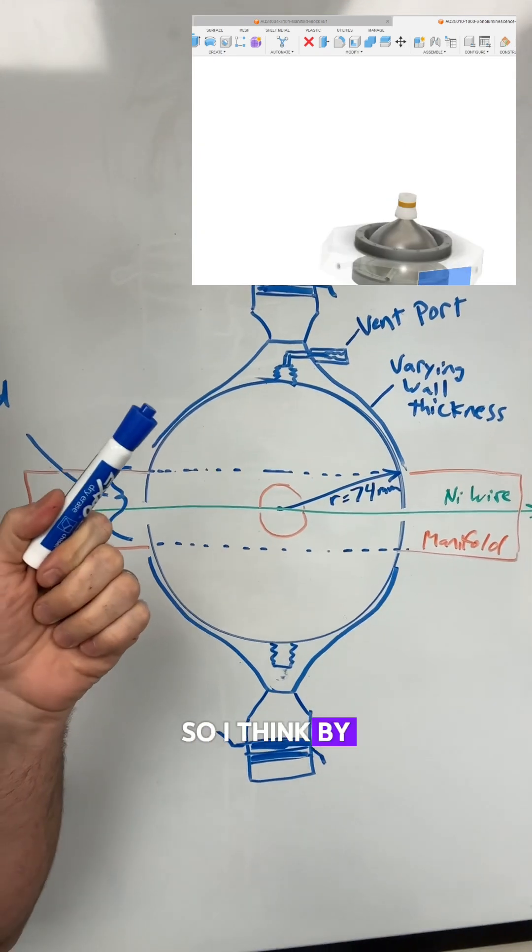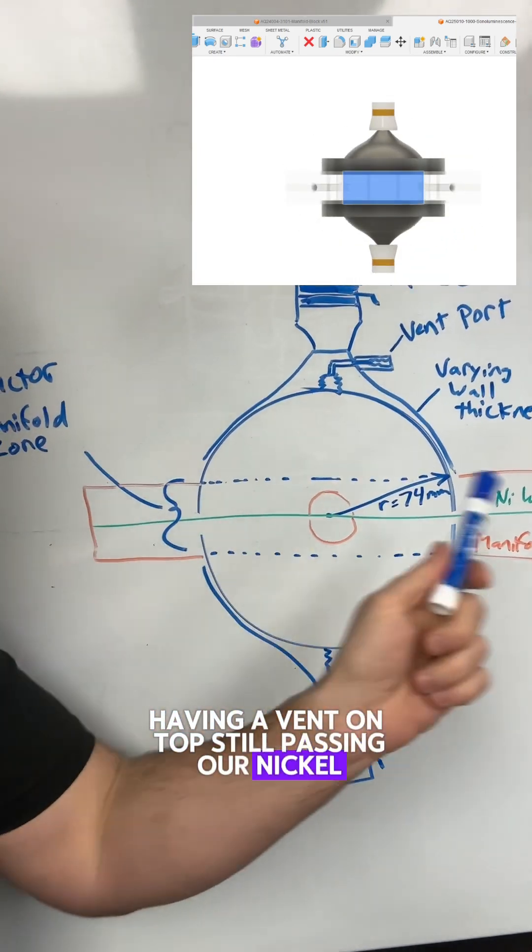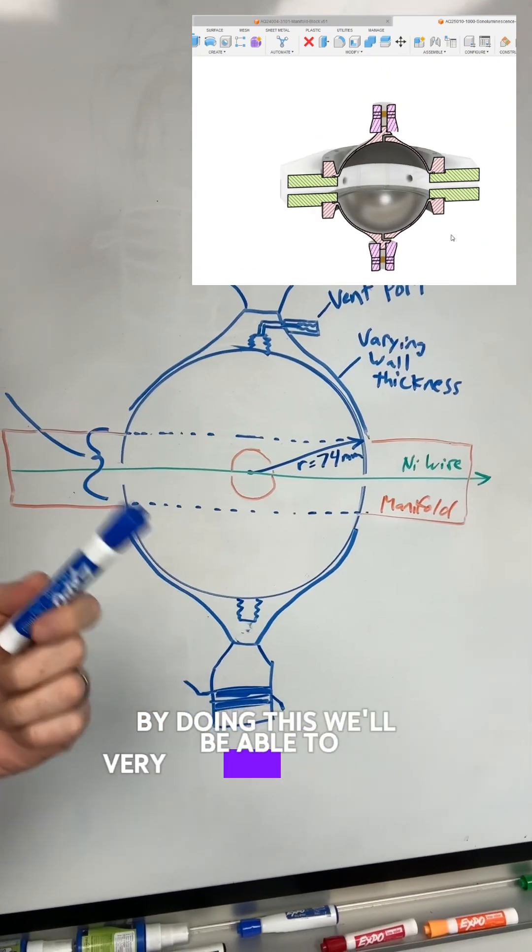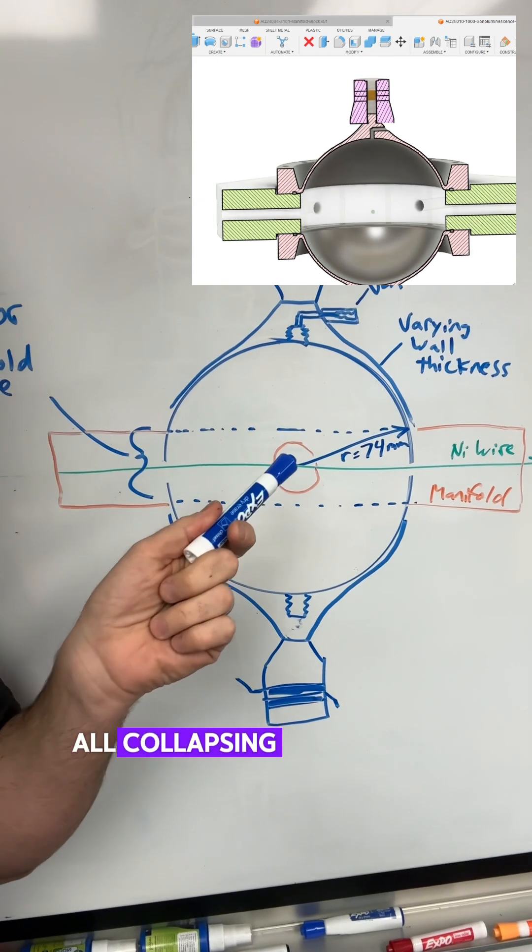By having those capabilities, having a vent on top, still passing our nickel wire through it, we'll be able to very carefully control what's going on with those pressure waves all collapsing in the center.